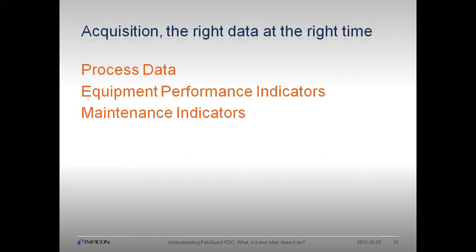Maintenance indicators are used to continuously monitor variables and events associated with maintenance. Like EPIs, they can accumulate time, counts, and quantities. For example, implant source hours and RF hours are both good maintenance indicators that can be monitored.